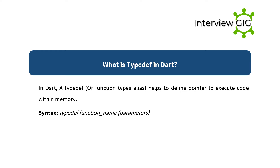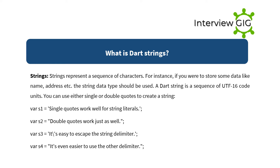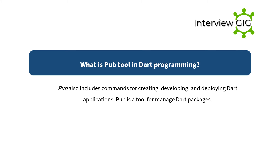What is Dart strings? Strings represent a sequence of characters. For instance, if you want to store data like name or address, the string data type should be used. A Dart string is a sequence of UTF-16 code units. You can use either single or double quotes: var s1 = 'single quotes work well'; var s2 = "double quotes work just as well"; var s3 = 'it\'s easy to escape the delimiter'; var s4 = "it's even easier to use the other delimiter".